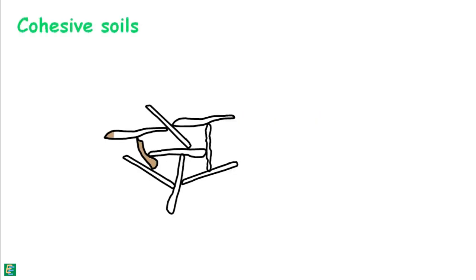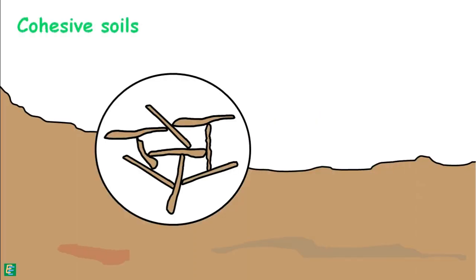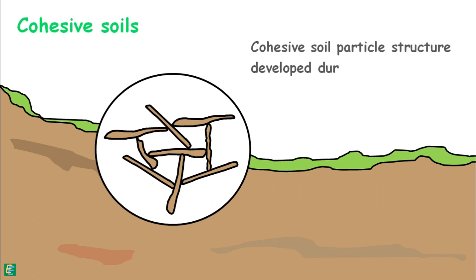Cohesive soils have a certain particle structure in their natural state of occurrence that was developed during the original process of soil formation.